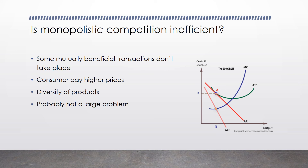The question then is: is monopolistic competition inefficient? It's true that because it's not at the minimum ATC, some mutually beneficial transactions don't take place. Along that demand curve — labeled AR — there are buyers willing to pay more than the marginal cost who are unable to buy the product. Consumers also pay higher prices for the good because firms have some market power, charging the price at the quantity where MC equals MR.